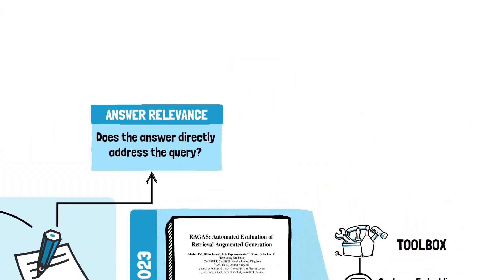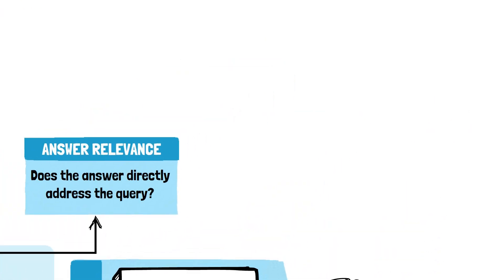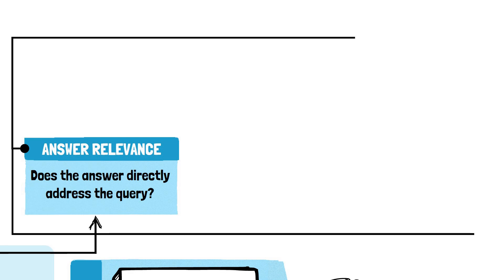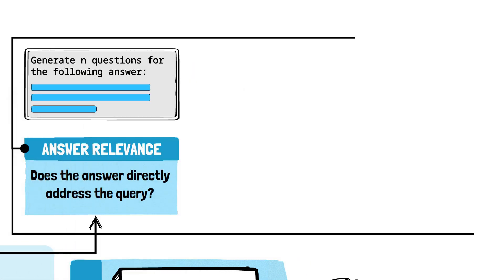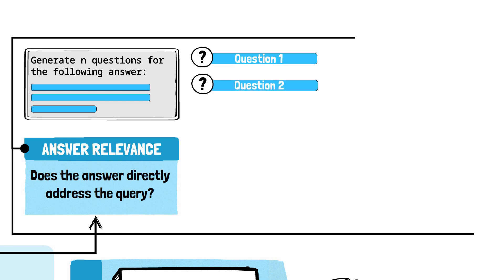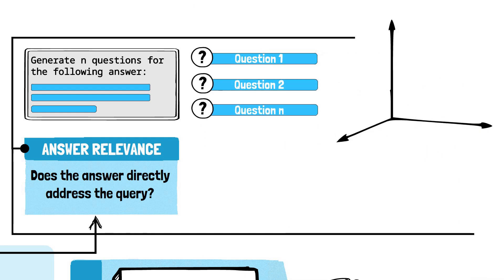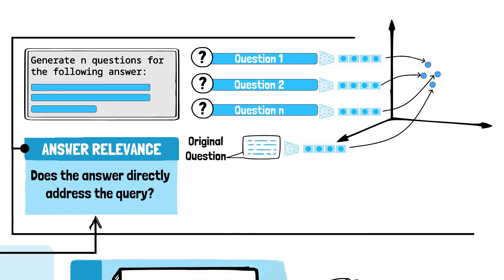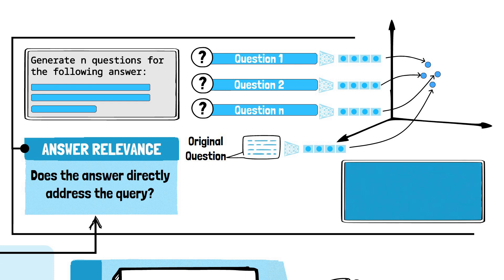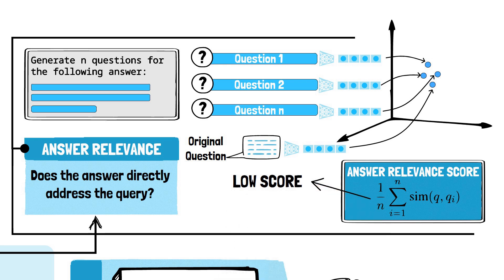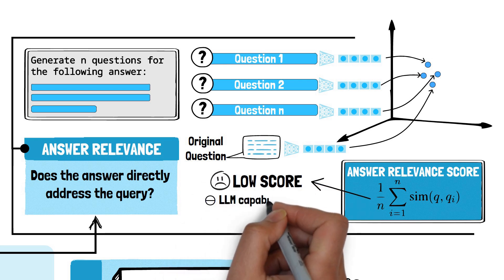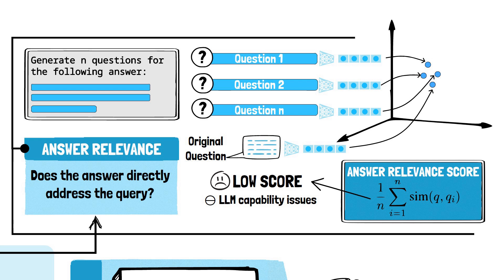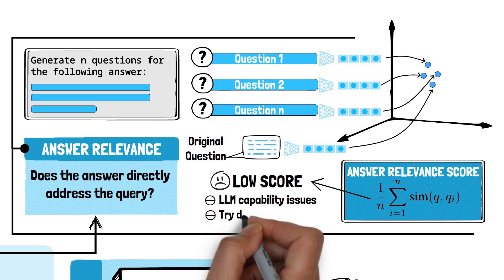To check answer relevance, RAGAS uses a similar two-step strategy. First, it prompts the LLM to generate multiple questions that could be addressed by the given answer. Then, embeddings for these generated questions are compared to the original question the user asked. If the average similarity score is high, it suggests that the answer was relevant to the original question. A low score might indicate that the LLM used to generate the answer is not capable enough for that task or domain, and a different LLM should be considered.